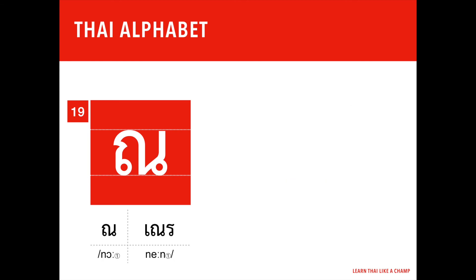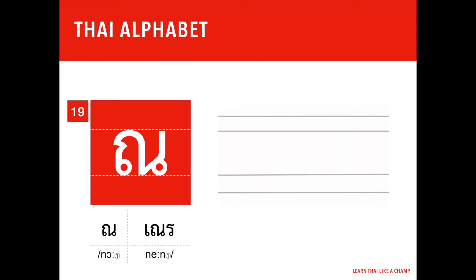Let's try that again. You start with a circle from the bottom, go clockwise, go up with a notch, curve to the right, go down, sharp angle, go to the right, make an inner circle, and then go up. And that's how to write Nå Nên in Thai.